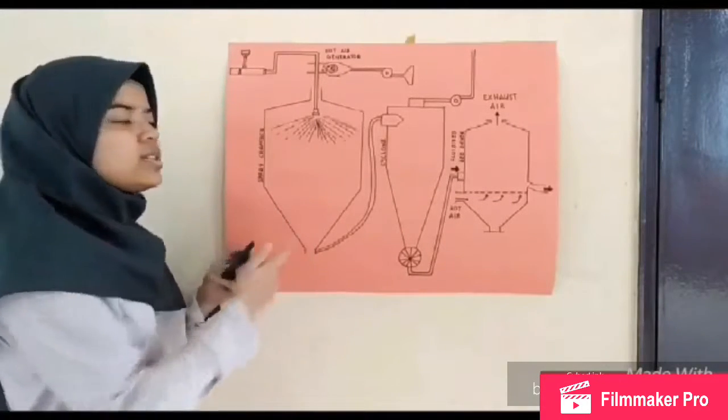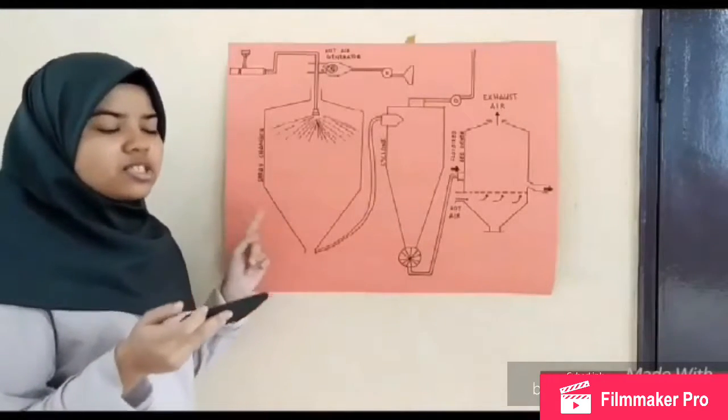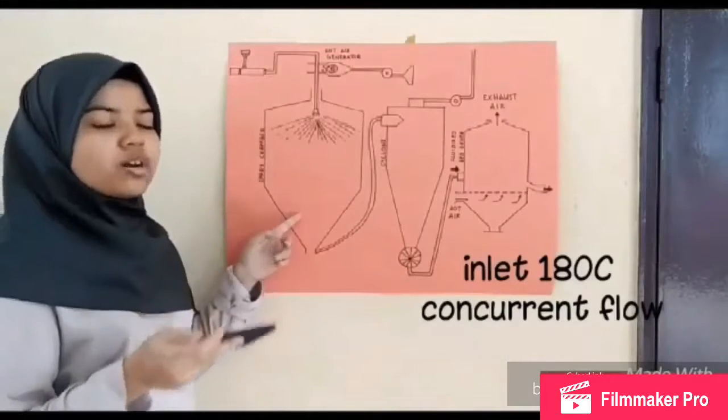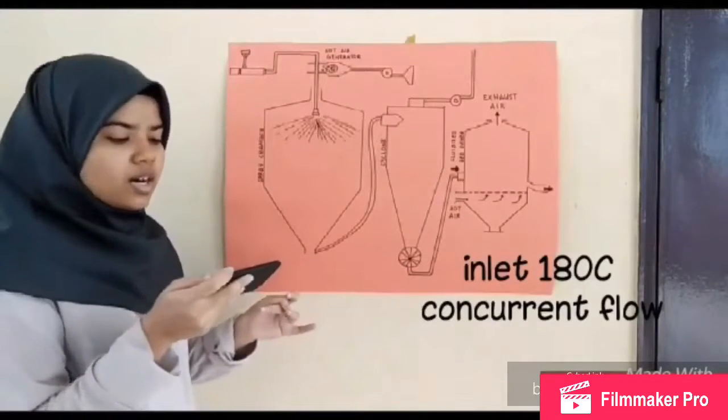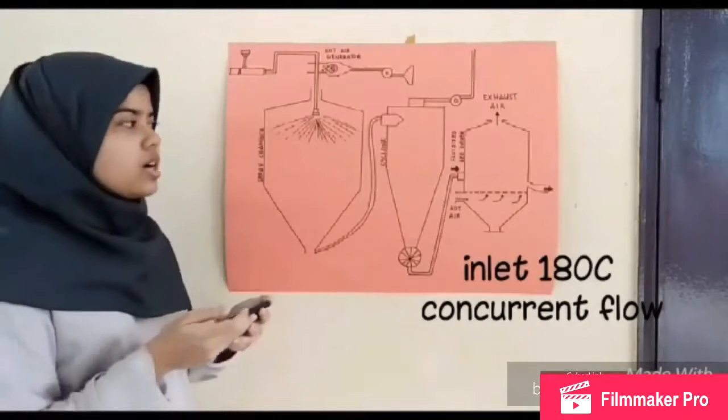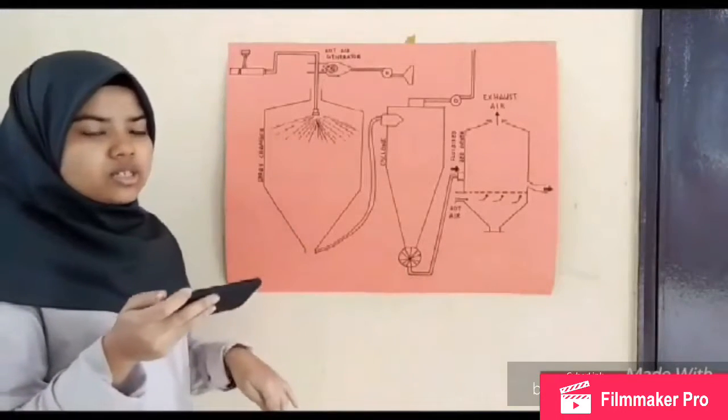The inlet air temperature is 180 degrees Celsius. In this chamber we use a concurrent flow dryer because it gives quick drying, and the outlet temperature is less than 50 degrees Celsius. This means that the powder has no heat degradation.